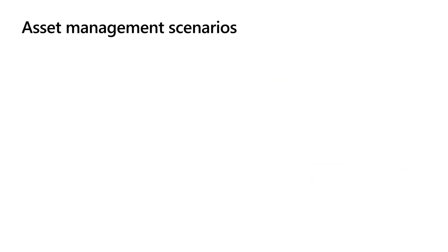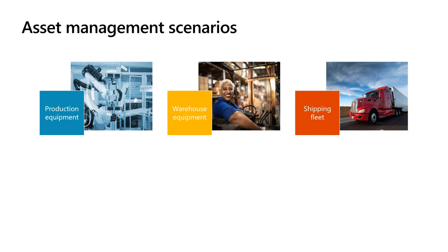Let's walk through some of the common scenarios that companies use asset management for in Dynamics. Three of the most common scenarios we see are using asset management to maintain equipment used in production, warehouse equipment such as forklifts, or even tracking the maintenance of a shipping fleet. These are the three scenarios we're going to focus most heavily on in this Tech Talk series because they're the most commonly used scenarios with Dynamics.